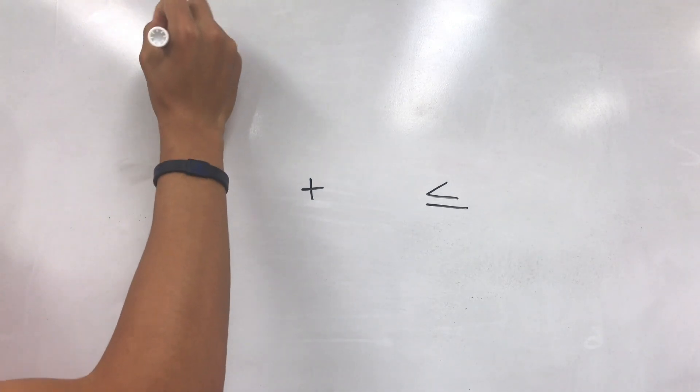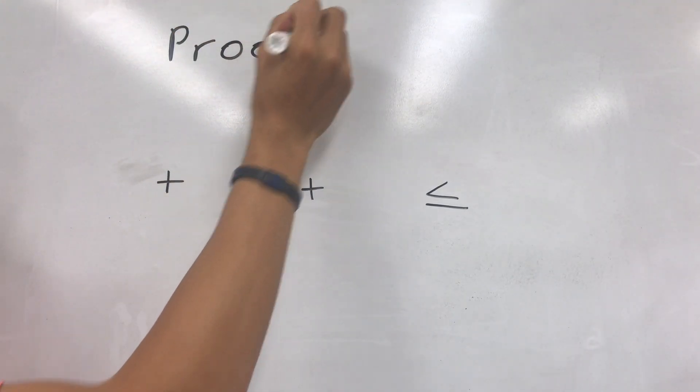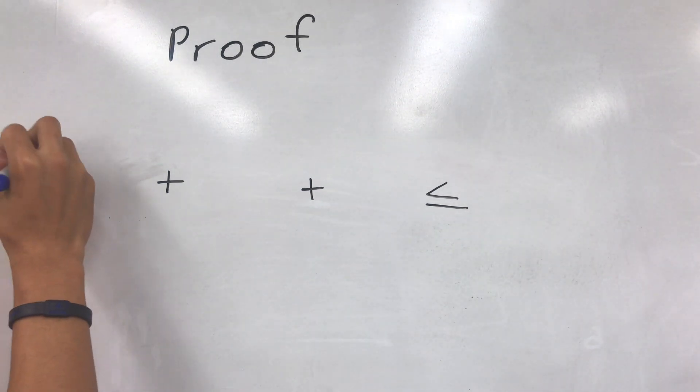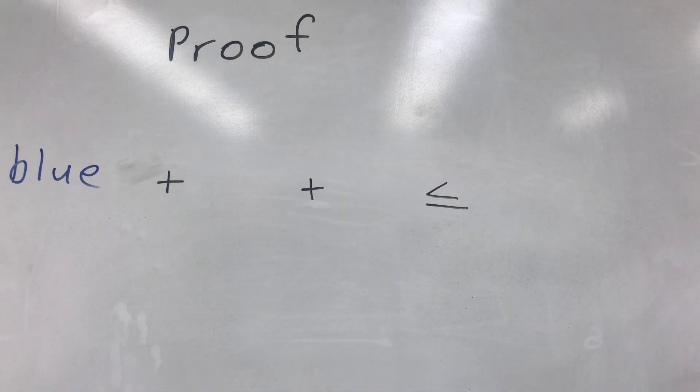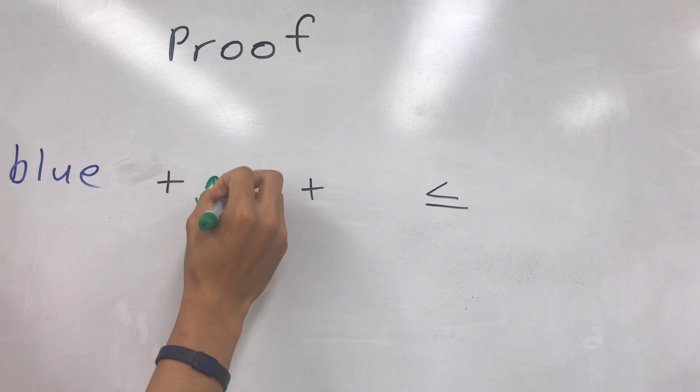We will prove that the color with the least number of vertices must be less than or equal to n over 3. We'll use blue to represent the color with the least number of vertices in the proof. We'll proceed by contradiction. The three colors are red, green, and blue, which add up to the total amount of vertices n.